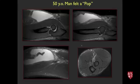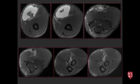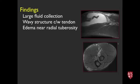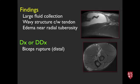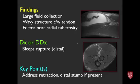Next case, 50-year-old man who felt a pop in the arm. MRI shows a huge fluid collection and a squiggly structure near the distal radius with edema. This is rupture of the distal biceps tendon, probably torn off the bone with possibly a small stump remaining. Key points: assess for complete versus incomplete tear, degree of retraction, and whether a stump is present.